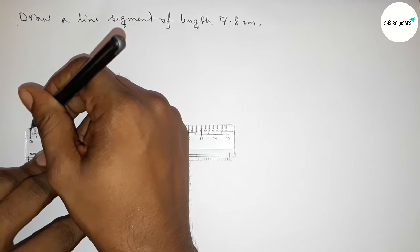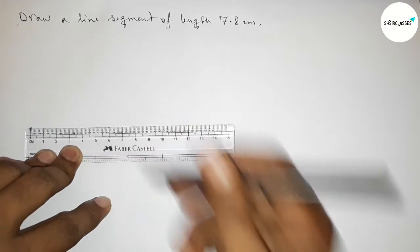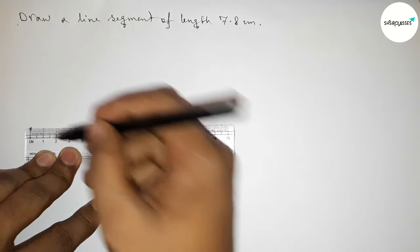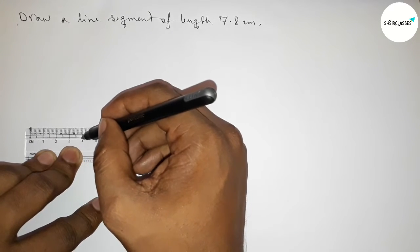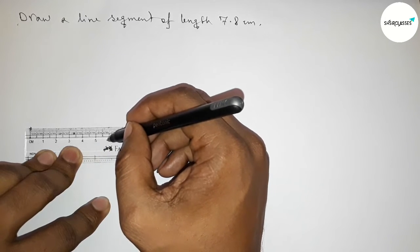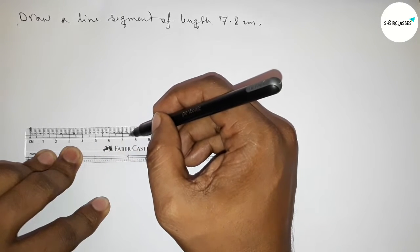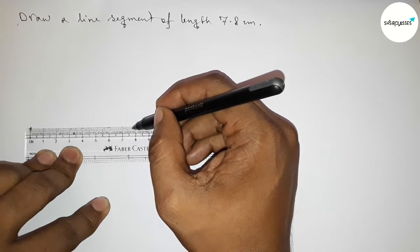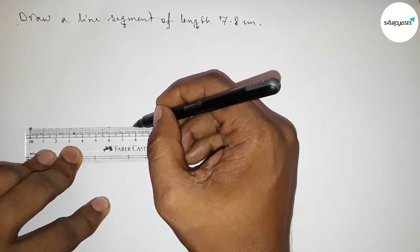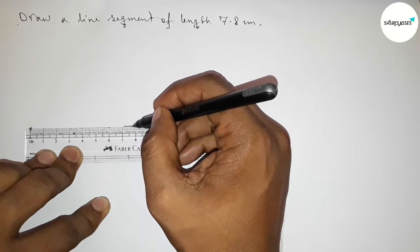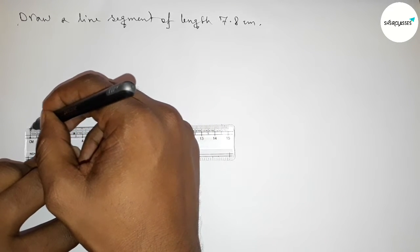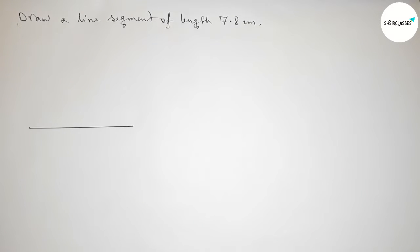First, mark the starting point at 0 here. Then count: 0, 1, 2, 3, 4, 5, 6, 7, and this is 7.5, 7.6, 7.7, 7.8. So this is 7.8 centimeters. Now mark 7.8 and join this line perfectly.